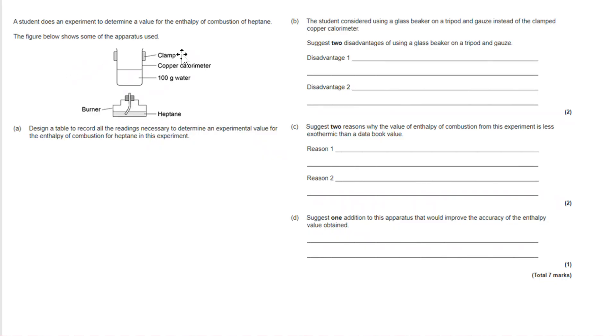Let's start working through. A student does an experiment to determine the value of enthalpy of combustion of heptane. We can see the apparatus set up. Your first job is to design a table to record all of the readings necessary to determine an experimental value for the enthalpy of combustion.